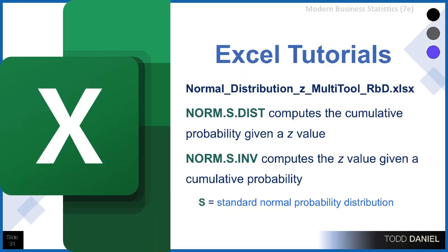That's a lot of work with a lot of steps to keep track of. So I've tried to simplify this by creating a spreadsheet called the Normal Distribution Z Multi-Tool Excel spreadsheet. This uses the formulas recommended in the textbook but in a structure that makes them much easier to use. We'll be using formulas like NORM.S.DIST and NORM.S.INV — the S means it's a standard normal probability distribution.